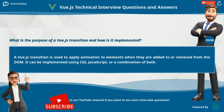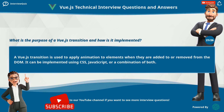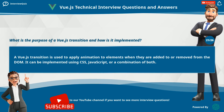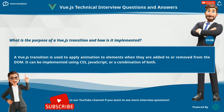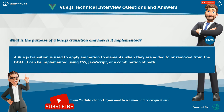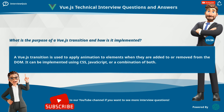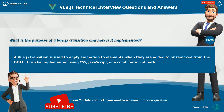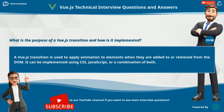What is the purpose of a Vue.js transition and how is it implemented? A Vue.js transition is used to apply animation to elements when they are added to or removed from the DOM. It can be implemented using CSS, JavaScript, or a combination of both.